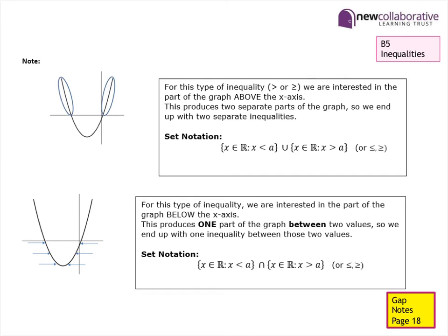To reinforce this further: if the inequality is greater than or greater than or equal to, we are interested in the parts of the graph above the X-axis. For a positive quadratic, this produces two separate parts of the graph and therefore two separate inequalities as the solution set. If the inequality is less than or less than or equal to, we look at the part below the X-axis, which gives one connected region between two values and therefore one inequality.